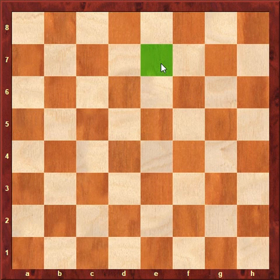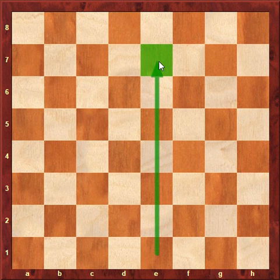Again, we need to start with the letter E, and this is the E file. This is the seventh rank. So this is the square E7.